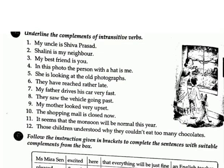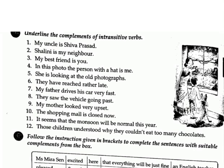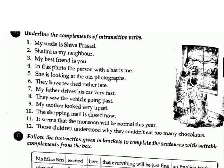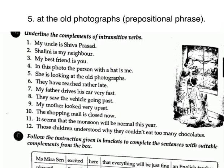Exercise H: Underline the complements of intransitive verbs. 1. My uncle is Shiva Prasat. Answer: Shiva Prasat — noun. 2. Shailini is my neighbor. Answer: my neighbor — noun phrase. 3. My best friend is you. Answer: you — pronoun. 4. In this photo the person with a hat is me. Answer: me — pronoun. 5. She is looking at the old photographs. Answer: at the old photographs — prepositional phrase.